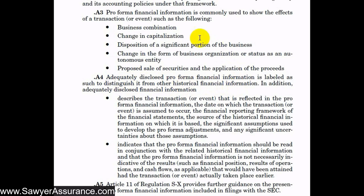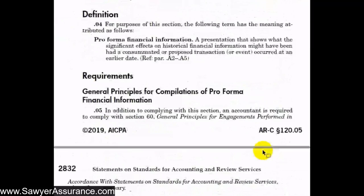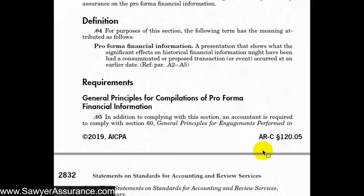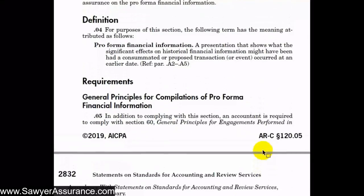This pro forma information needs to be distinguished from historical financial information, and the following items should be adequately disclosed: a description of the transaction, the date on which the transaction is assumed to have occurred, and the assumptions used to develop the pro forma figures. The pro forma information should be read in conjunction with the historical financial information.